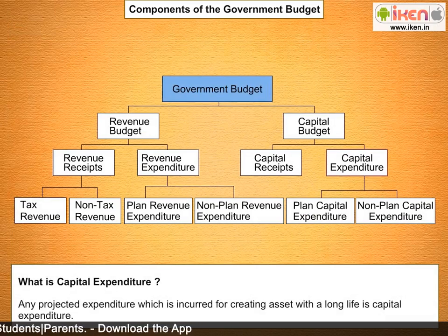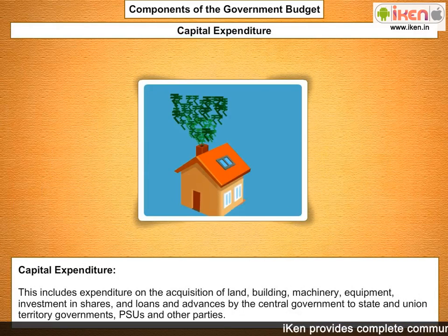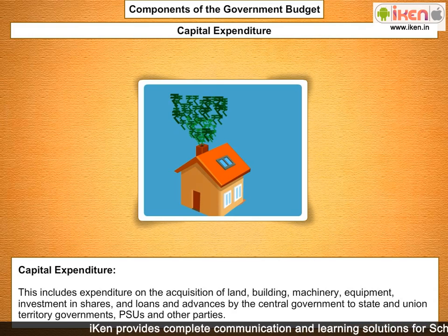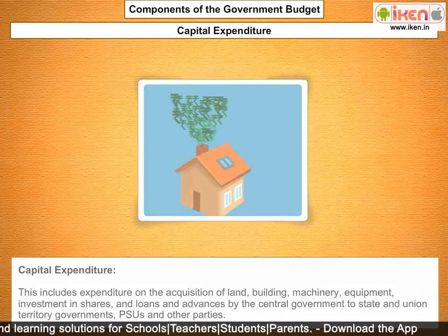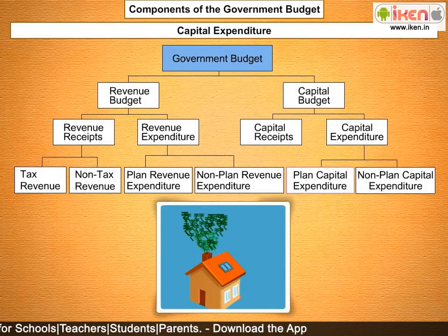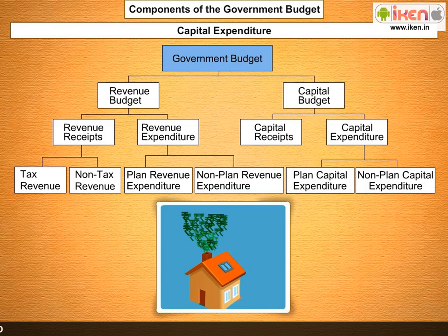Capital expenditure is any projected expenditure incurred for creating an asset with a long life. It includes expenditure on the acquisition of land, buildings, machinery, equipment, investment in shares, and loans and advances by the central government to state and union territory governments, PSUs, and other parties. Capital expenditure is also categorized as plan and non-plan; plan capital expenditure relates to the central plan and central assistance for state and union territory plans.